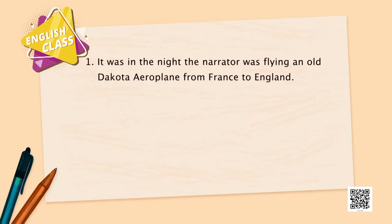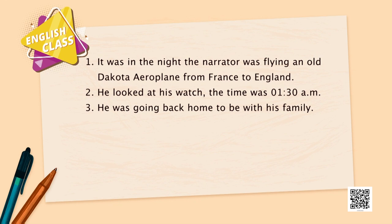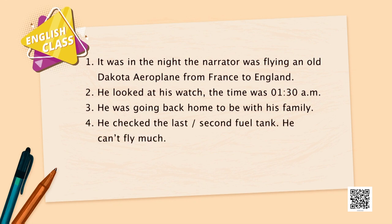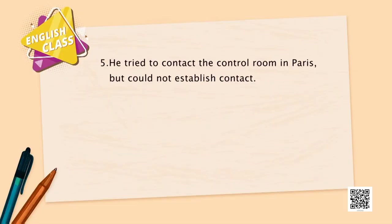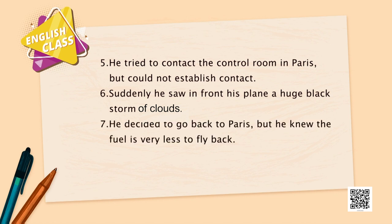It was night. The narrator was flying an old Dakota aeroplane from France to England. He looked at his watch — the time was 1:30 a.m. He was going back home to be with his family. He checked the last fuel tank; there are two fuel tanks in any aeroplane and he was running on reserve. He tried to contact the control room in Paris but could not establish contact. Suddenly, he saw a huge black storm of clouds in front of his plane.